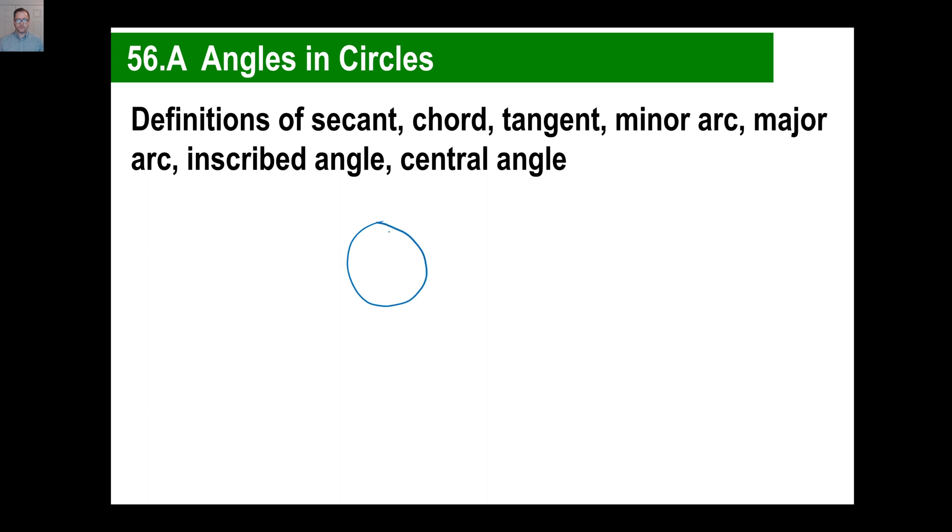A secant is a line that cuts across a circle at exactly two points. The line segment from here to here, that's called a chord. If you have a chord in a circle that goes right through the center of the circle, that's called a diameter. A tangent is a line that touches a circle exactly one time. An arc, you know what arcs are, just outside parts of the curve of the circle. A minor arc, a major arc, we'll talk about those in a second.